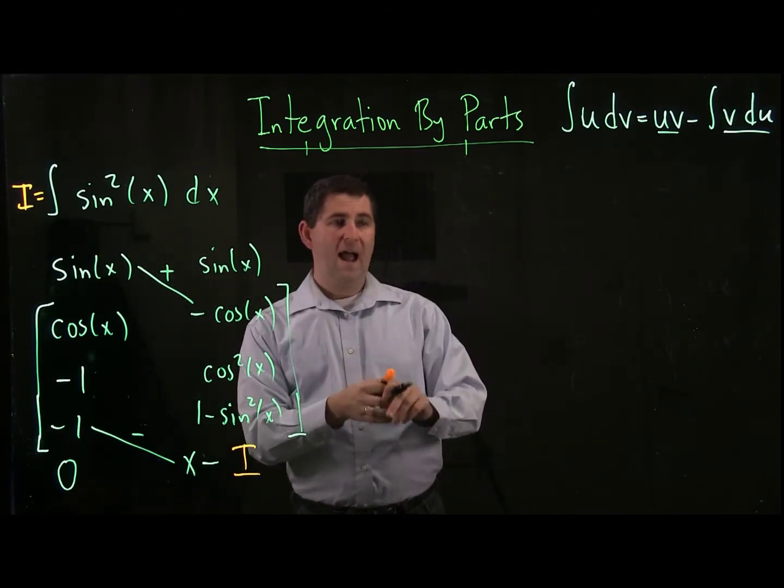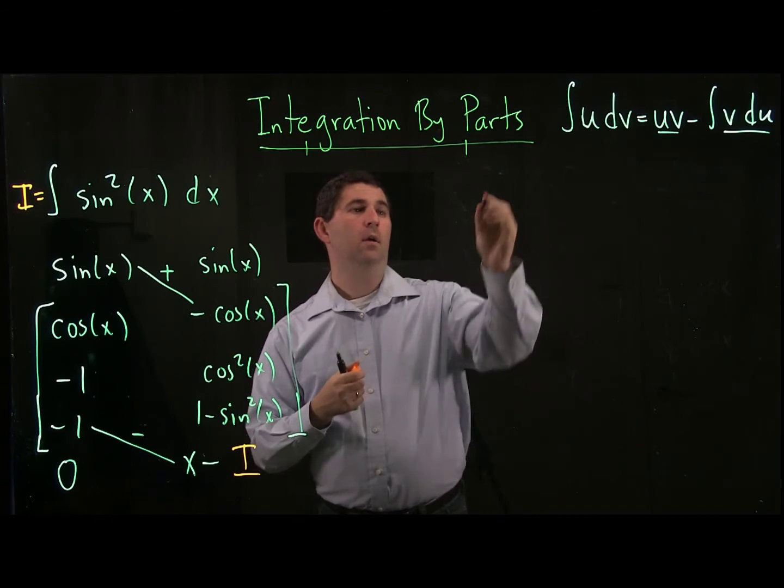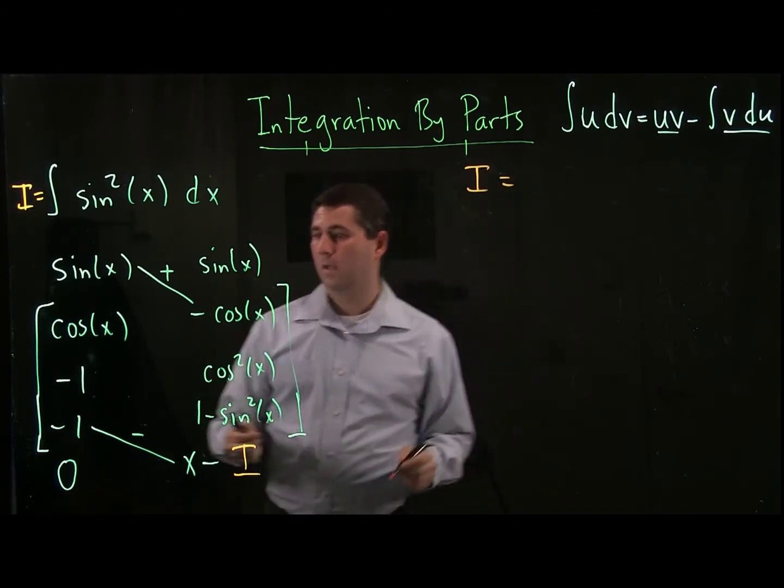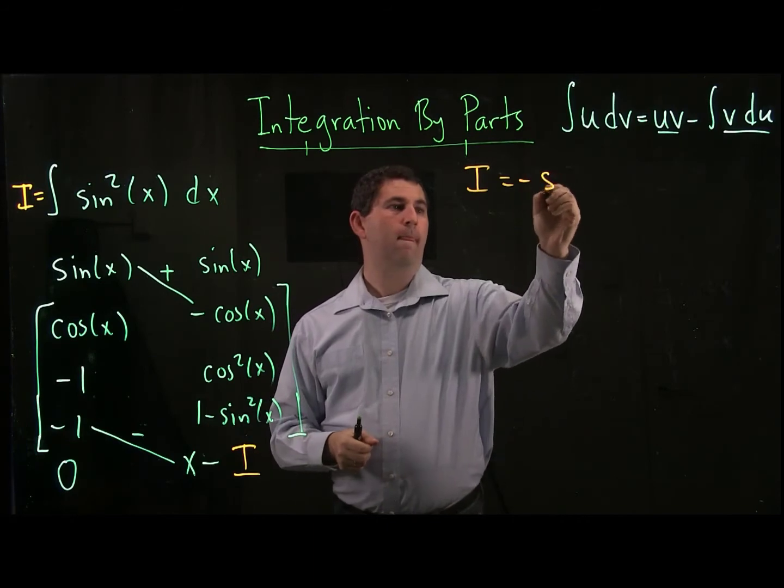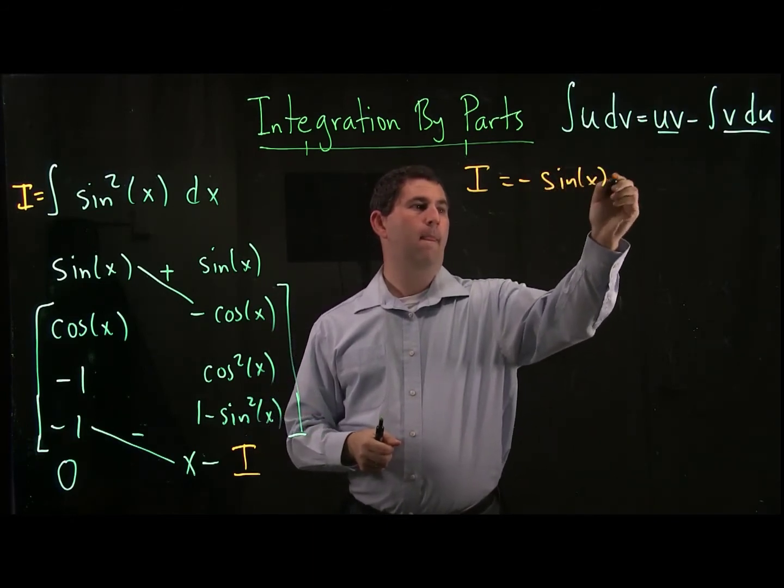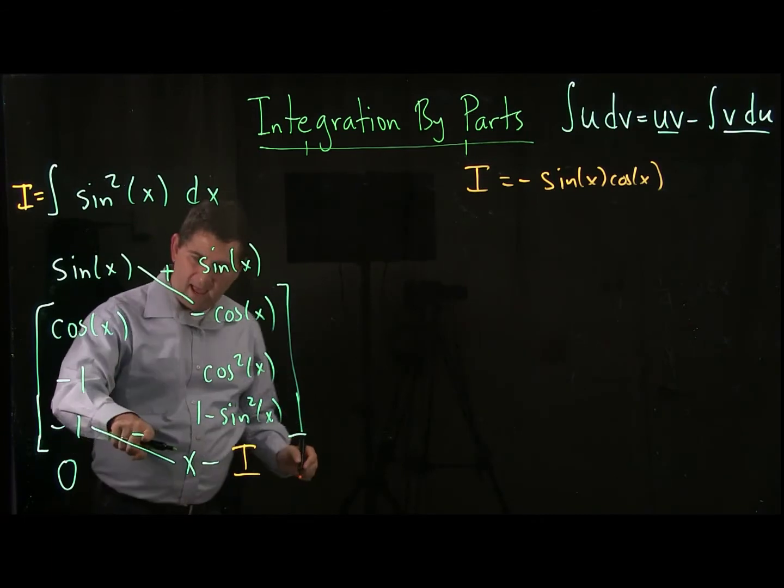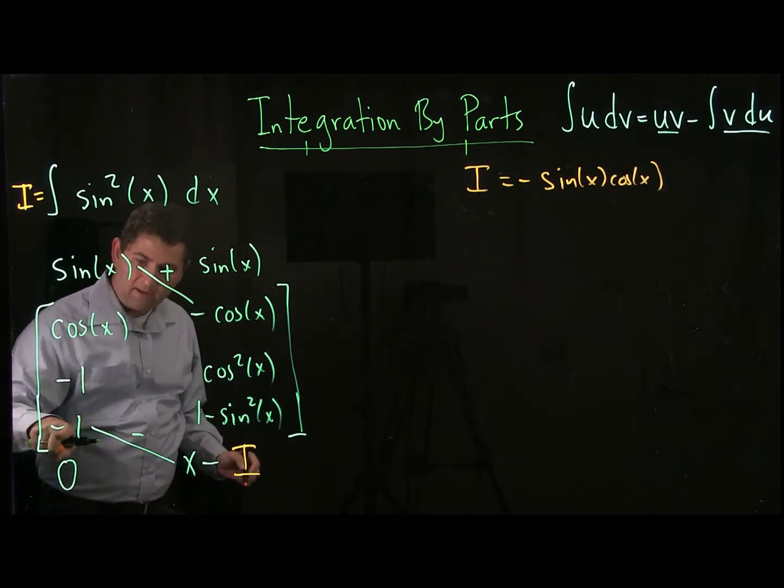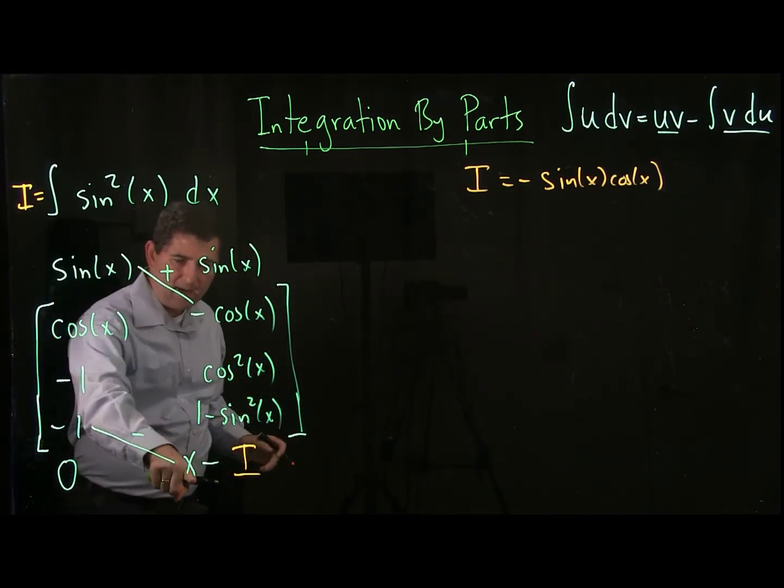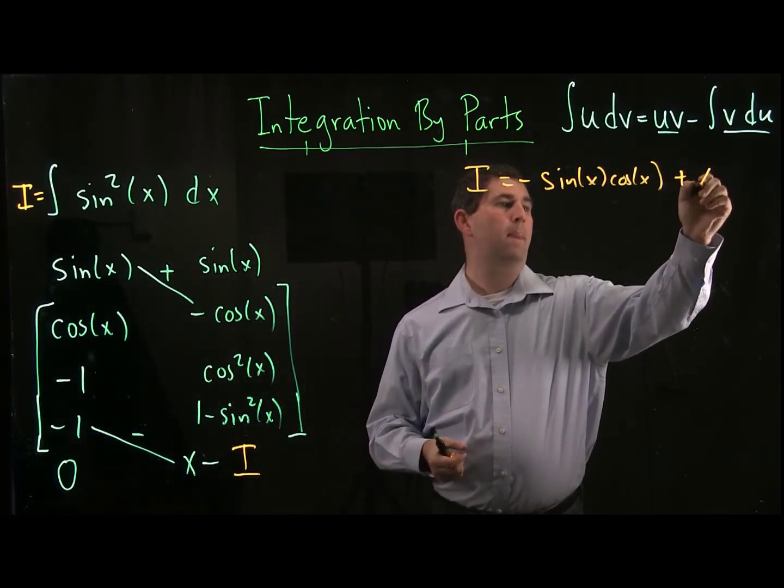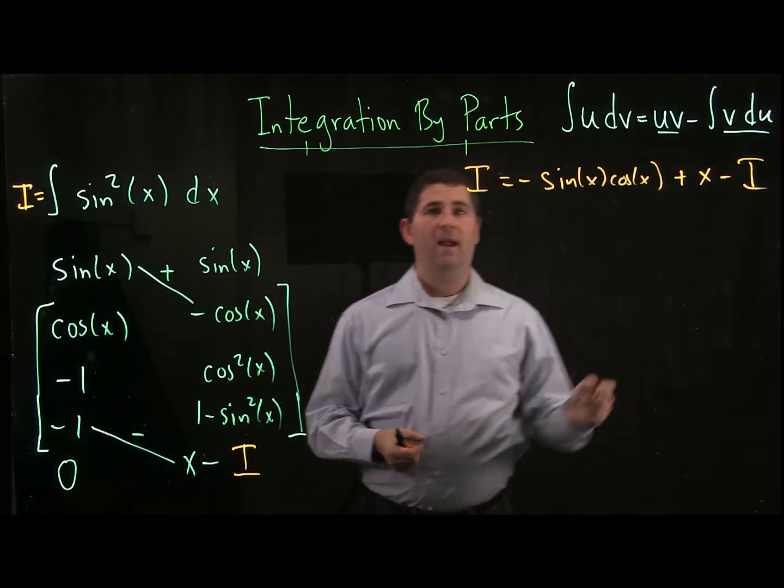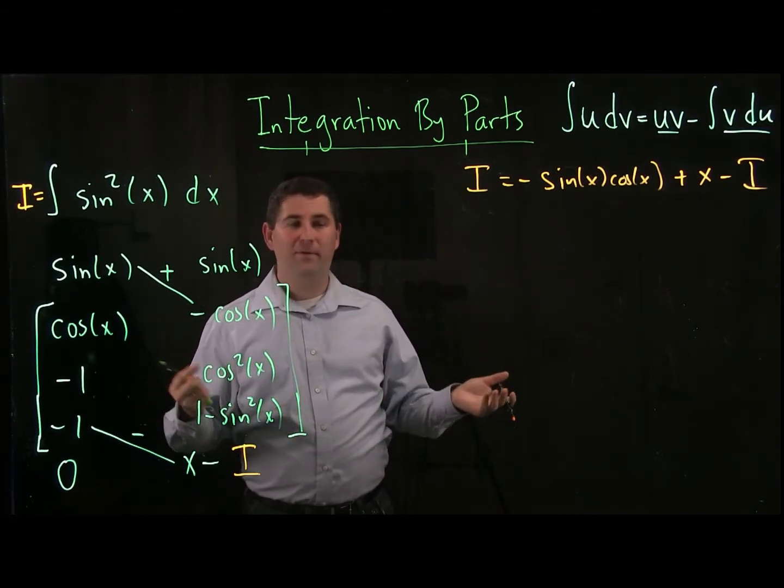So what do we get all together? So our i equals negative sine times cosine, and then we have minus minus one, so those cancel, x minus i. So we get plus x minus i.